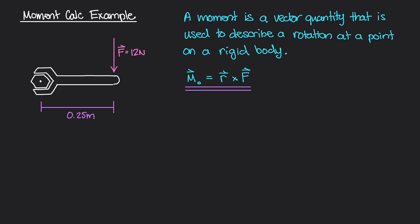I'm going to do this example two ways. The first way, in this video, is figuring out the magnitude of the moment caused by force F, then using the right-hand rule to determine the direction of the moment — whether it's going this way or the other way. In the next video, I'll do the same example but introduce unit vectors, breaking the position vector R and force vector F into x and y components and using the cross product formula.